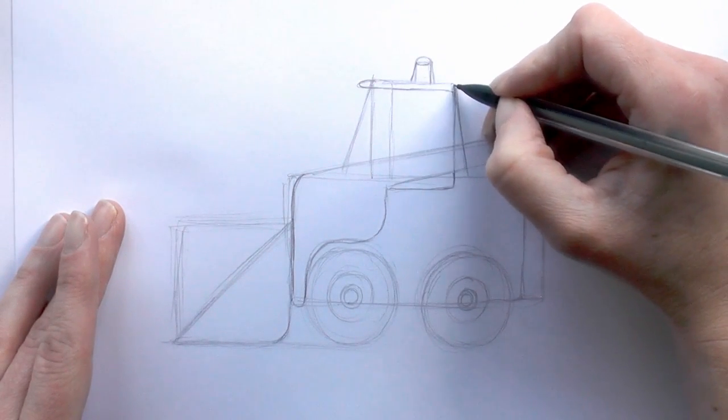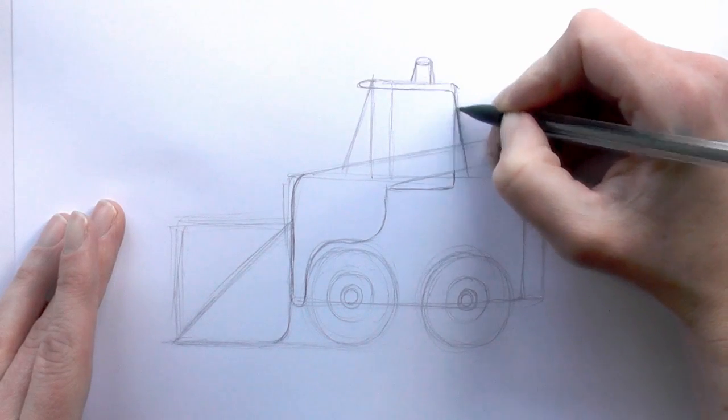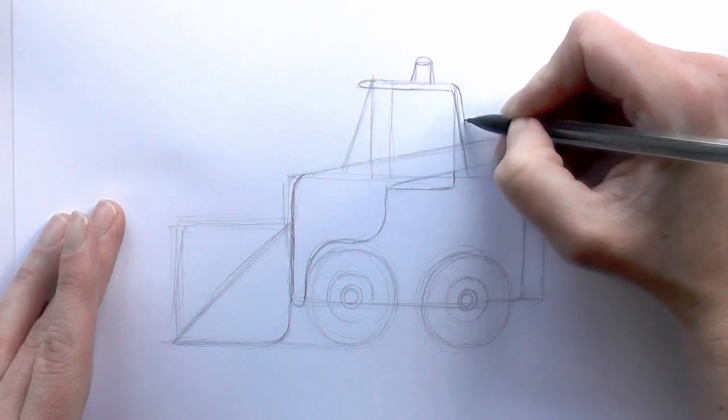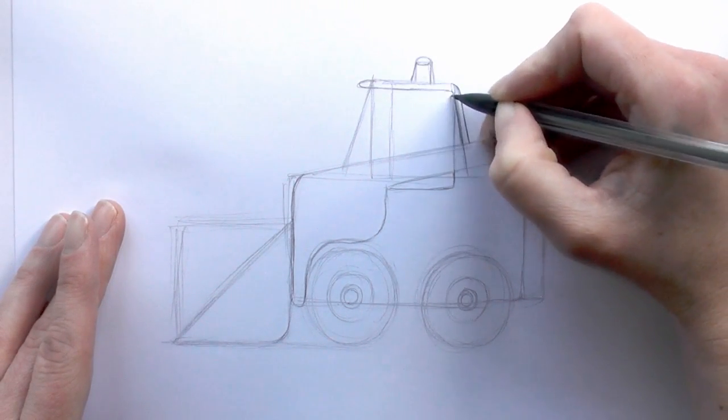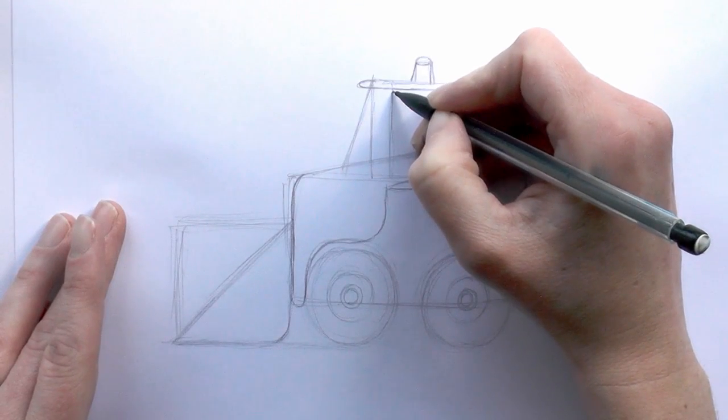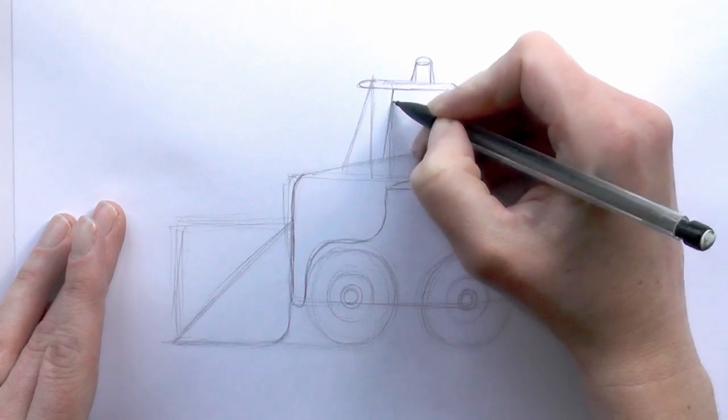Come down here and then just want to take that line there, and then run another line down along that bit. And then we're just going to angle that line.